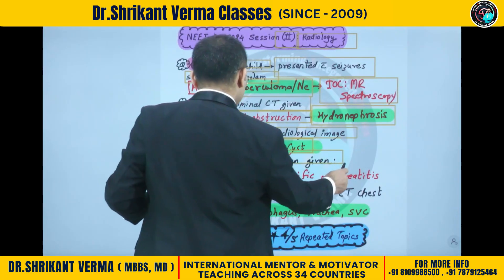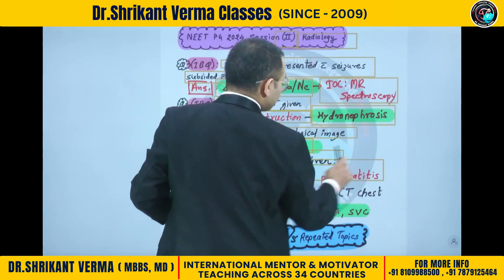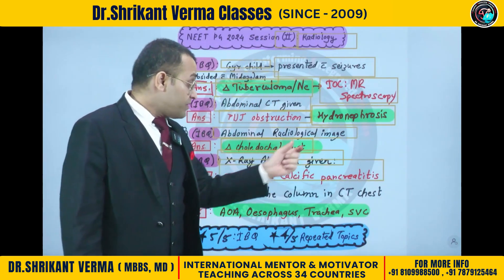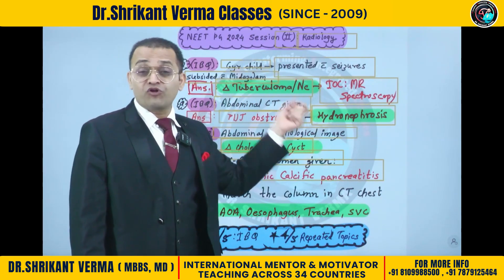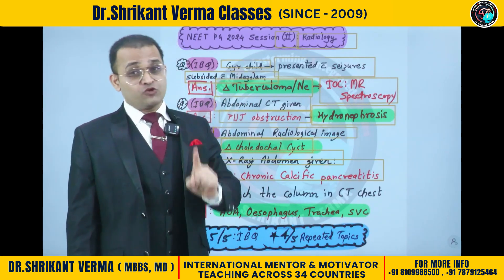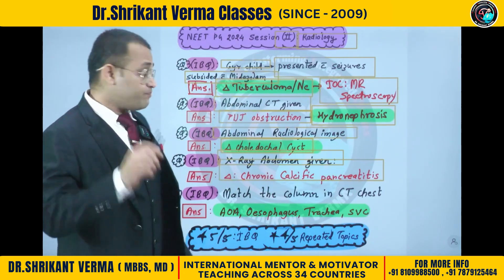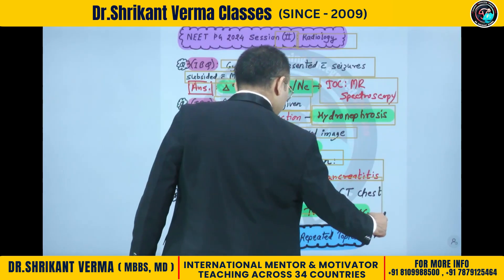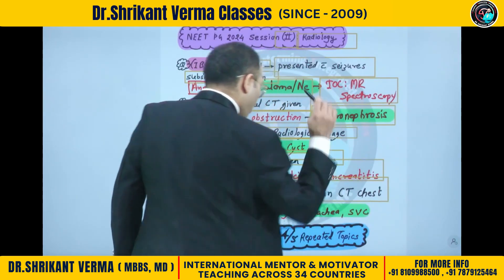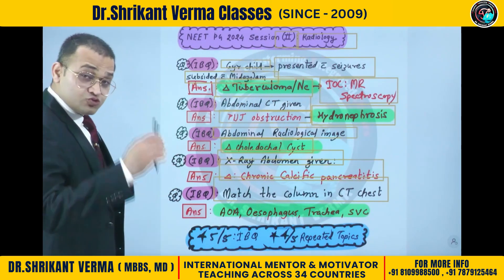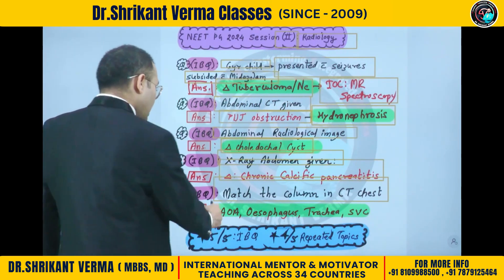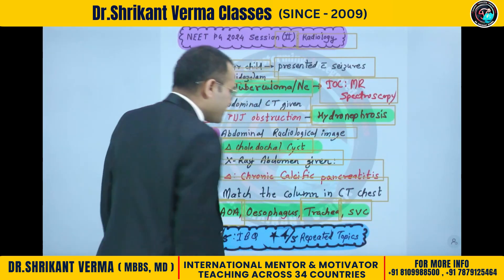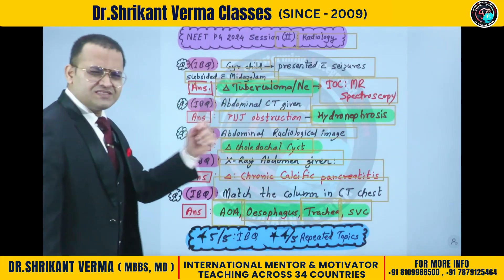An X-ray abdomen was given where chronic calcific pancreatitis had been asked. It was a tricky question. Generally they are asking acute pancreatitis, but this time they asked chronic pancreatitis. The next question was a very easy question - match the column in CT chest. They asked about the arch of the aorta, the esophagus, trachea, and the superior vena cava. This was a very simple kind of question.